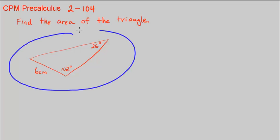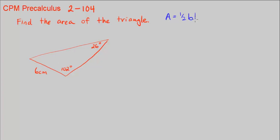So here's our triangle. We know that in general the area of a triangle is equal to one-half times the base times the height. But we don't have a base and a height.